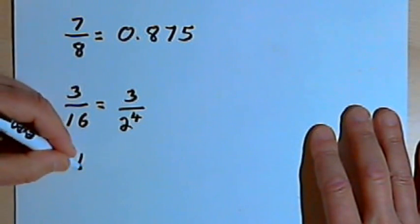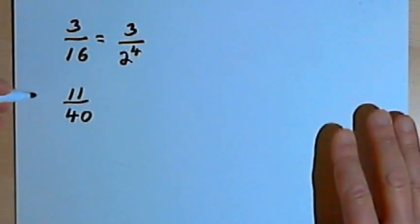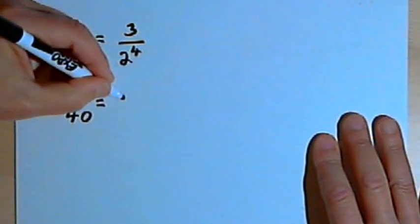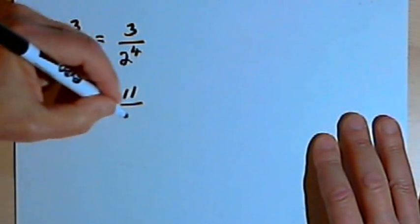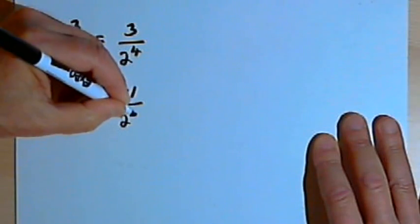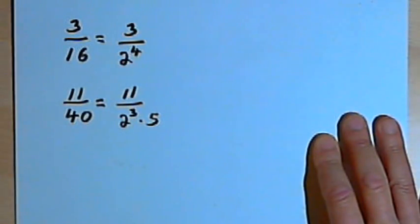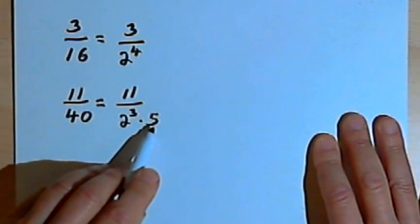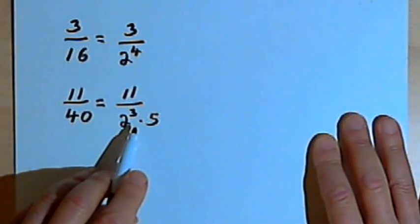If I have 11 over 40, it's also reduced as much as possible. If I factor the denominator, 40 is 8 times 5, and 8 is 2 to the third power, times 5. Now I've got 2s and 5s in the denominator. That's fine, that will give me a terminating decimal, and there's no other prime factors. So this will terminate.